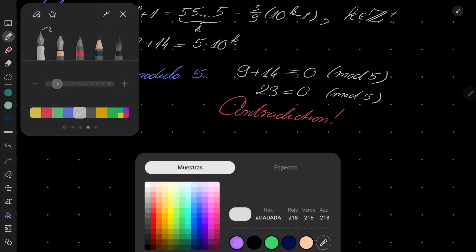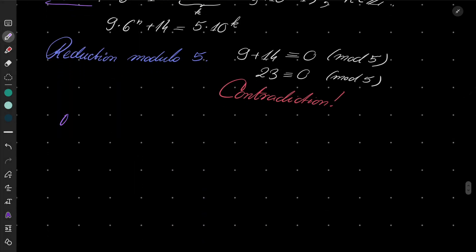So no luck there. Third and last case, case number three and final. Our number 6 to the power of n plus 1 has only digits 7.